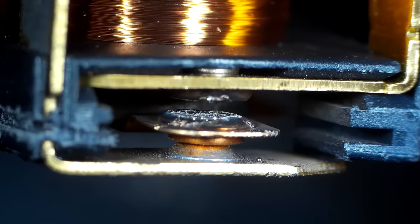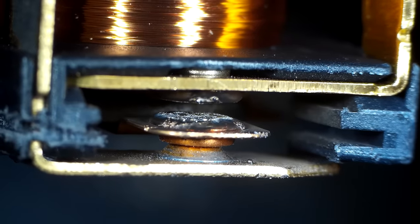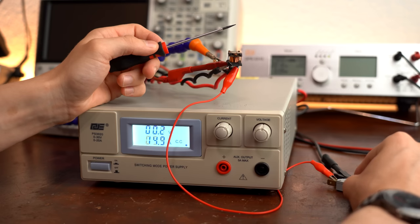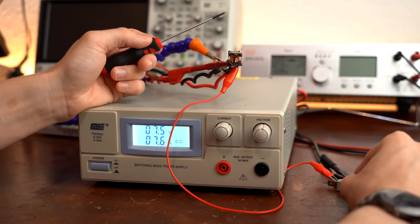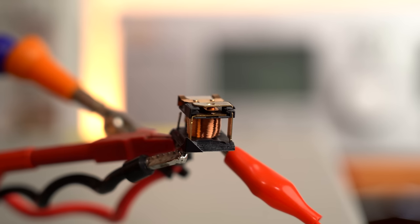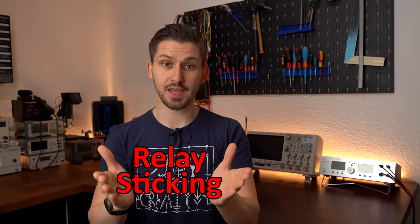Now I think everyone can guess that those sparks are not good for the relay. They not only destroy the contact material but sooner or later they will weld them together so that the contacts cannot open anymore when unpowering the relay. And only a well placed smack can separate them once again. This occurrence is called relay sticking.